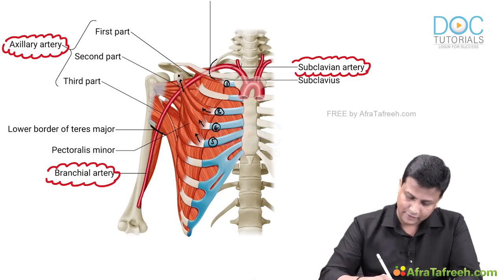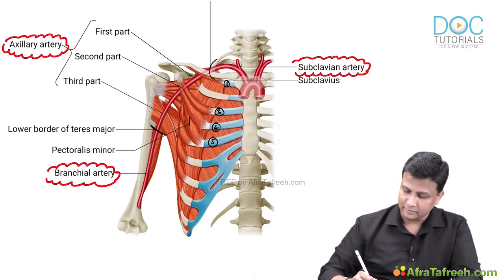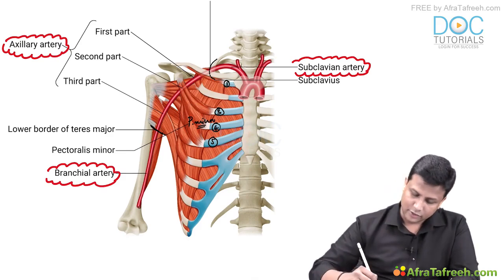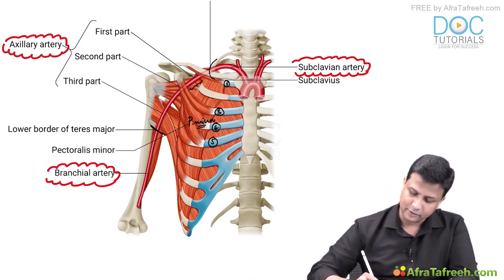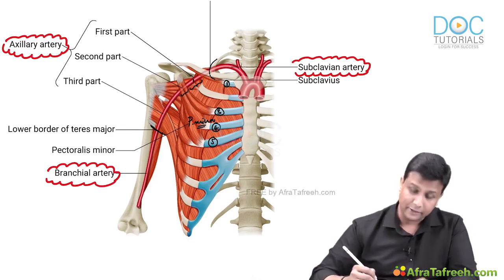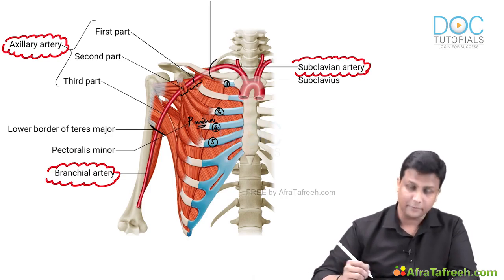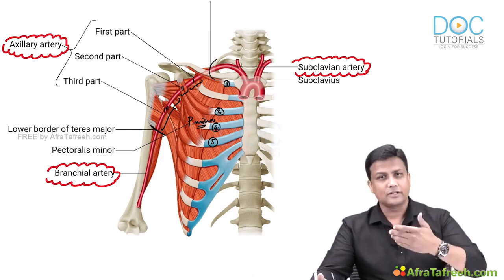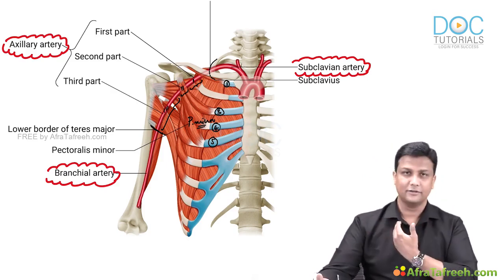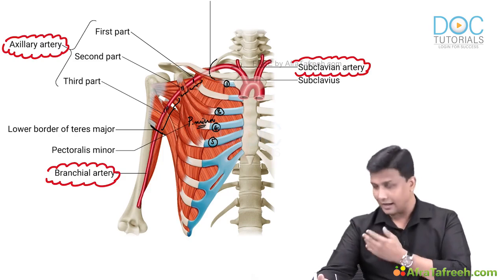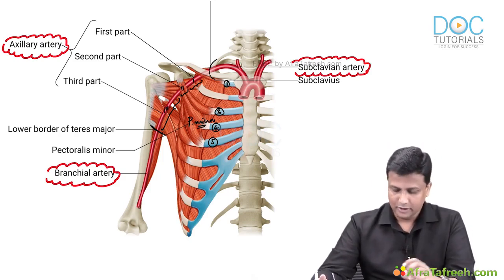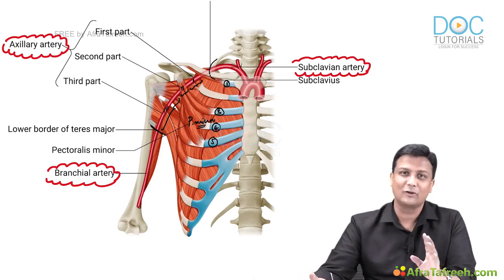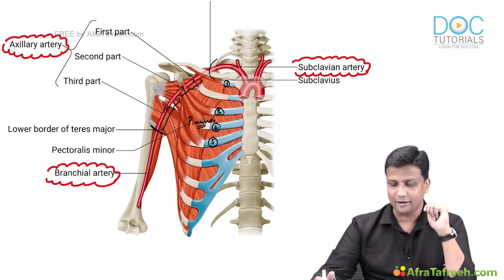Because of the pectoralis minor muscle, the entire axillary artery is divided into three parts. There is a small part before the muscle — that is the first part. There is a part of the axillary artery behind the muscle — that is the second part. And there is another part after the muscle, distal to it — that is the third part. So pectoralis minor muscle divides the axillary artery into three parts.